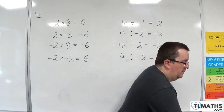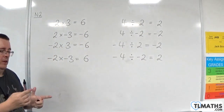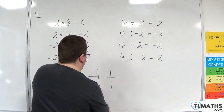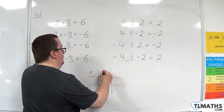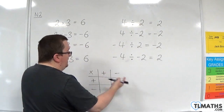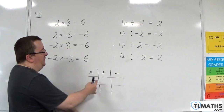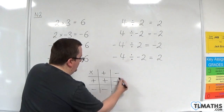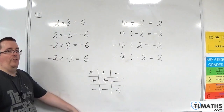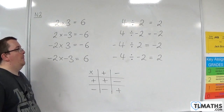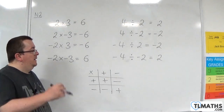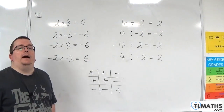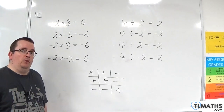Some people remember the multiplication and division of negative numbers using a little table — like a multiplication grid. Positive times positive is positive; positive times negative is negative; negative times positive is negative; negative times negative is positive. That is how positives and negatives work together with addition, subtraction, multiplication, and division.